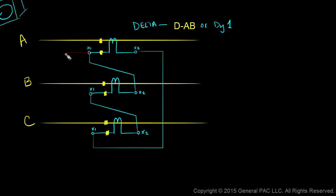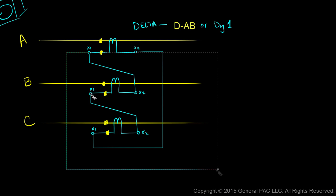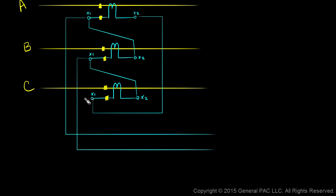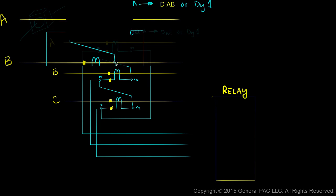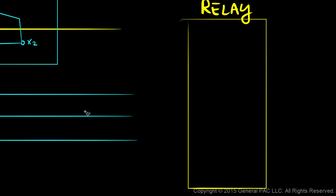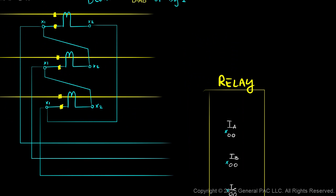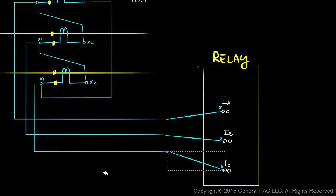Now we connect the X1 bushing of our CTs to our relay. Our relay has terminal inputs for Phase A, Phase B, and Phase C. One of these input terminals is marked as the polarity side. The polarity side of our CT conductor — the X1 bushing — is connected to the polarity input terminal of the relay for Phase A, Phase B, and Phase C.